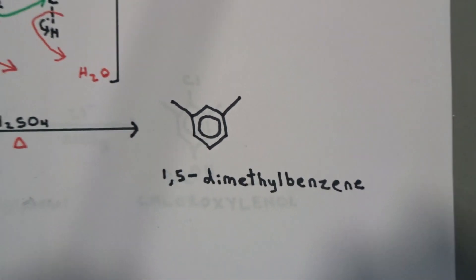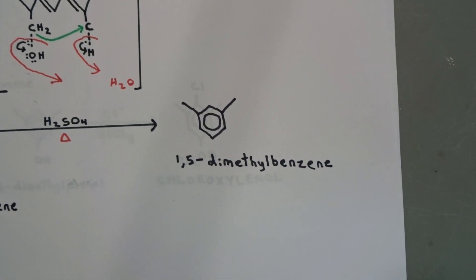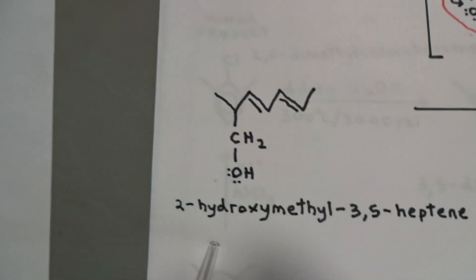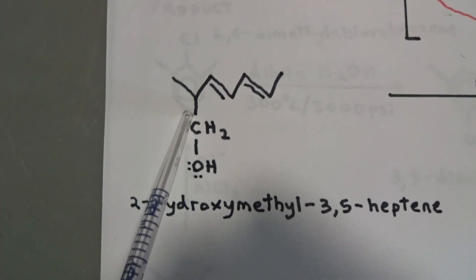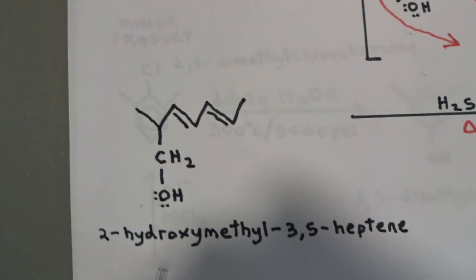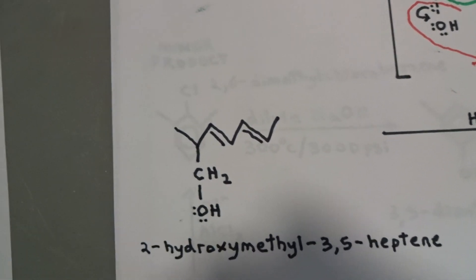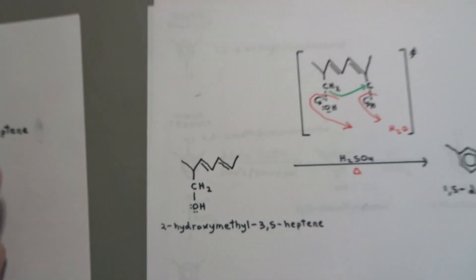But how do we close that ring and add the 2-methyl groups? We're going to be starting it from this product, 2-hydroxymethyl-3,5-heptene. It's a heptene molecule, with double bonds in it.